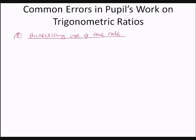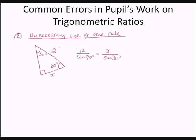The second common error is the unnecessary use of the sine rule in simple situations. Consider a right angle triangle with angles of 30 and 60 degrees, a hypotenuse of 12 units, and unknown side x. Pupils tend to apply the sine rule: 12 over sine 90 degrees equals x over sine 30 degrees, then rearranging to x equals 12 times sine 30 degrees divided by sine 90 degrees — requiring extra effort.